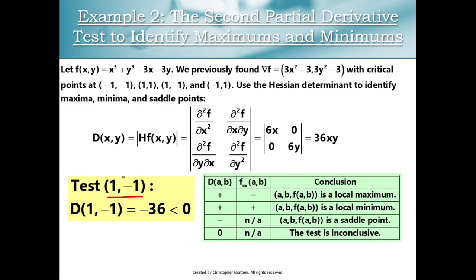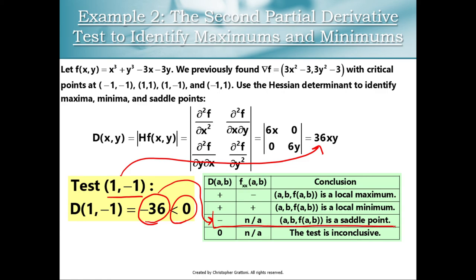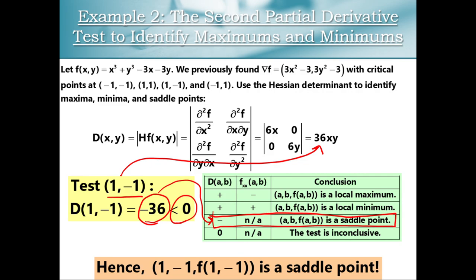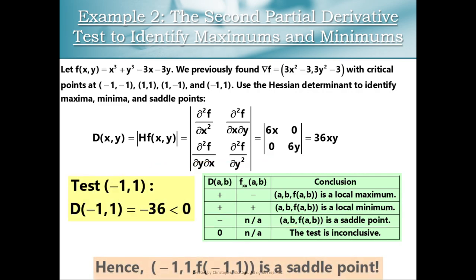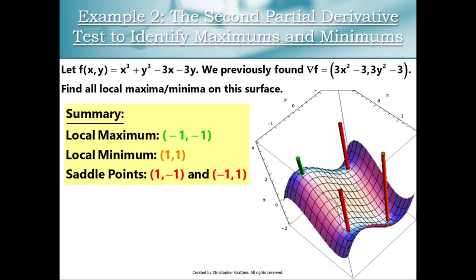For the saddle points: plugging (1,-1) into the Hessian determinant gives a negative number. Since the determinant is negative, we have a saddle point — no further calculation needed. You'll get the same result for the other saddle point at (-1,1). And so we've used the Hessian determinant as a second derivative test for classifying maxes, mins, and saddles on surfaces.